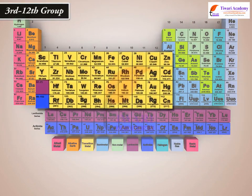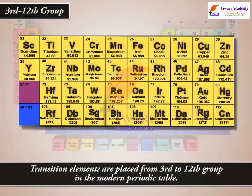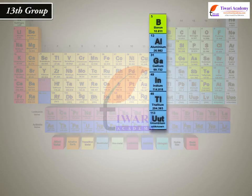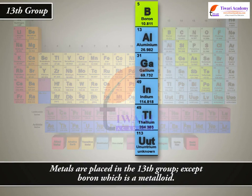Transition elements are placed from 3rd to 12th group in the Modern Periodic Table. Boron is an exception as a metalloid.